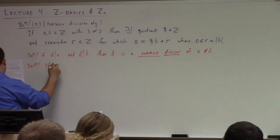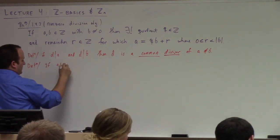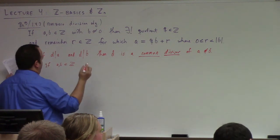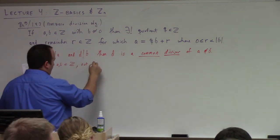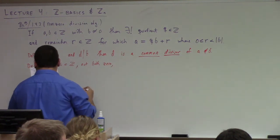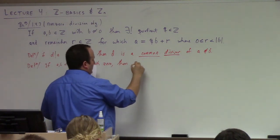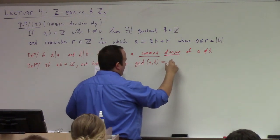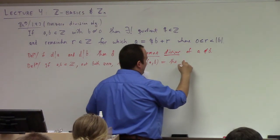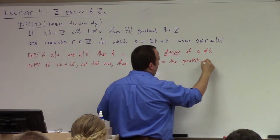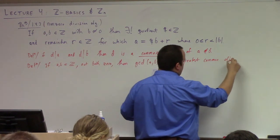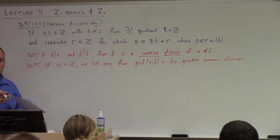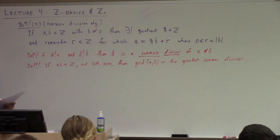That gives us our next definition: if a and b are integers, not both 0, then the greatest common divisor of a and b — GCD(a, b) — is equal to the greatest common divisor. What do we mean by greatest common divisor? Just what it sounds like: you take the set of all possible common divisors, and the greatest one of those is the GCD.